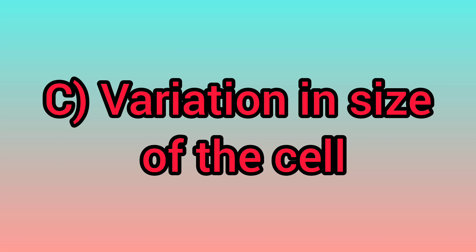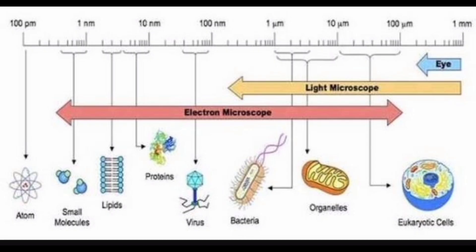Next, let us discuss about variations in the size of cells. The size of cells in living organisms may be as small as a micrometre or as large as a few centimetres. The smallest cell is 0.1 to 0.5 micrometres in bacteria. The largest cell, measuring 170 mm × 130 mm, is the egg cell of an ostrich. Most cells are microscopic and not visible to the unaided eye. Importantly, cell size has no relation to the size of the body of an animal or plant.